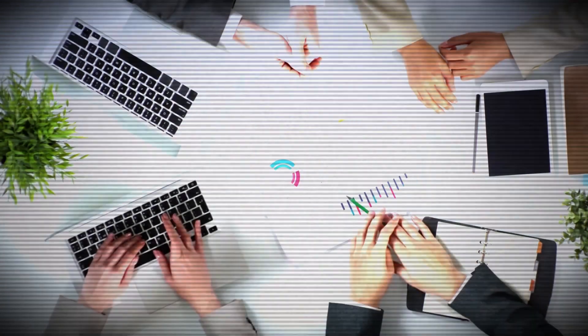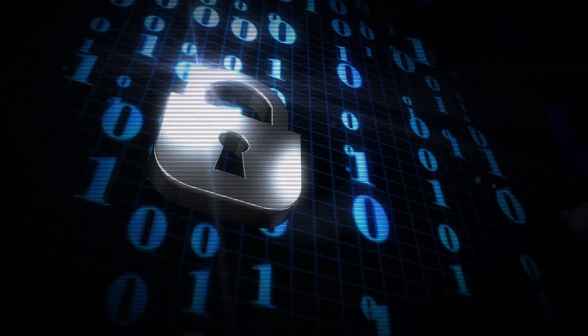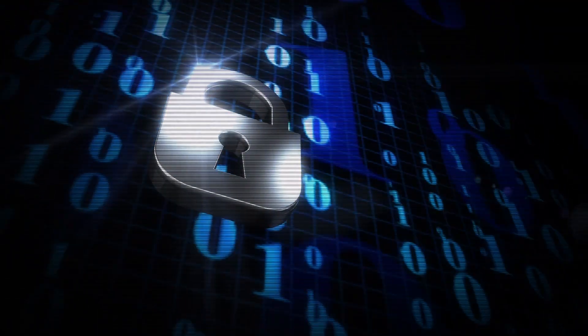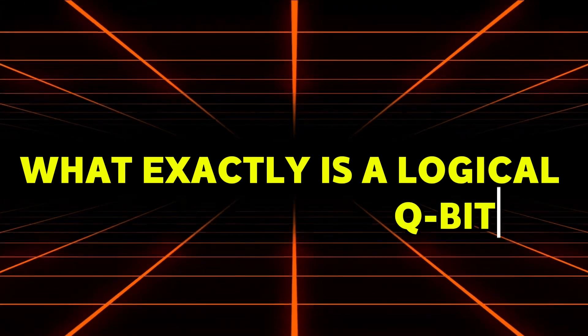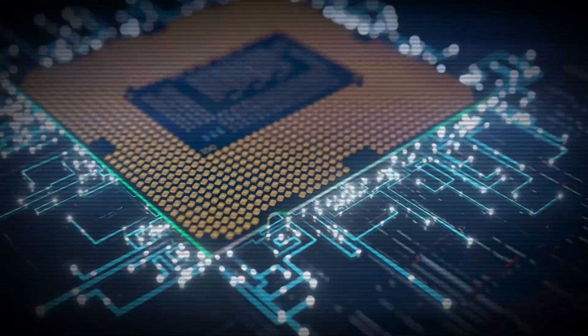Experts estimate that to break Bitcoin's encryption, quantum computers would need at least 4,000 logical qubits. And when I say logical qubits, you must be thinking, what exactly is a logical qubit? So here's the catch: in quantum computing, there are actually two types of qubits, one physical qubit and one logical qubit.